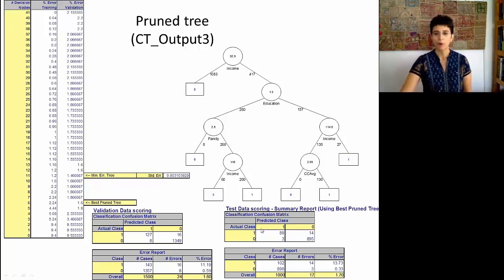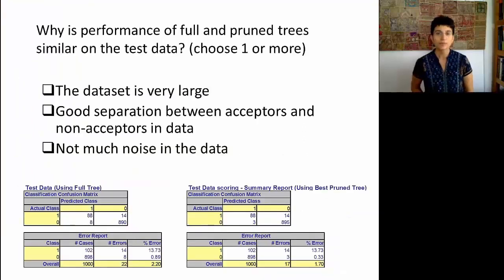Now compare the performance on the validation and the test, and you'll see that again they're quite similar. But if you compare the errors here, the performance of the validation is a tiny bit better. And that's expected because remember that the validation data are used to determine this pruning. To close, let me keep you thinking about the following question, and let's discuss this on the forum. Why is the performance of the full tree and the pruned tree similar on the test data for this particular example? Look at the confusion matrices on the bottom here, this is for the full tree, and this is for the best pruned tree, and think about why we're getting performance that is really quite similar.